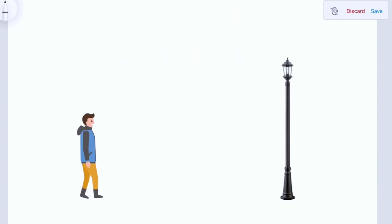We can see in this diagram we have a person and a pole. Let me draw a horizontal line at his eye level. So this is going to be our reference line.